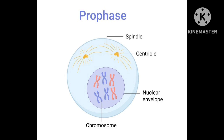Prophase is the first stage of mitosis. It is further divided into three different stages: early prophase, mid prophase, and late prophase. During early prophase, the chromatin network and nucleolus are present inside the nucleus, which is surrounded by a nuclear membrane. A pair of centrosomes is also present near the nucleus.